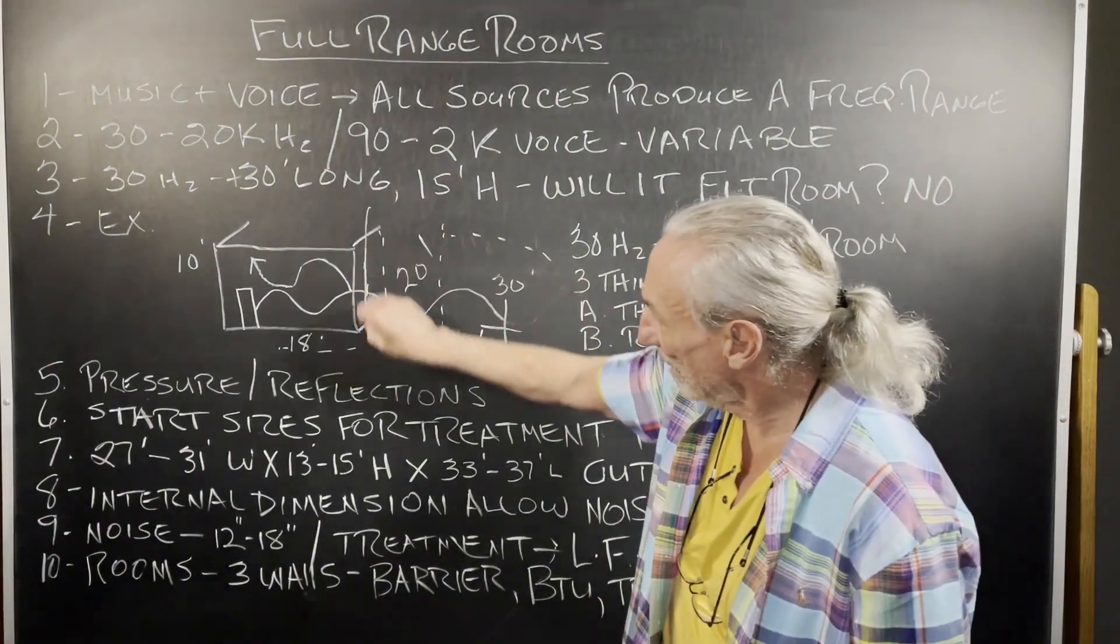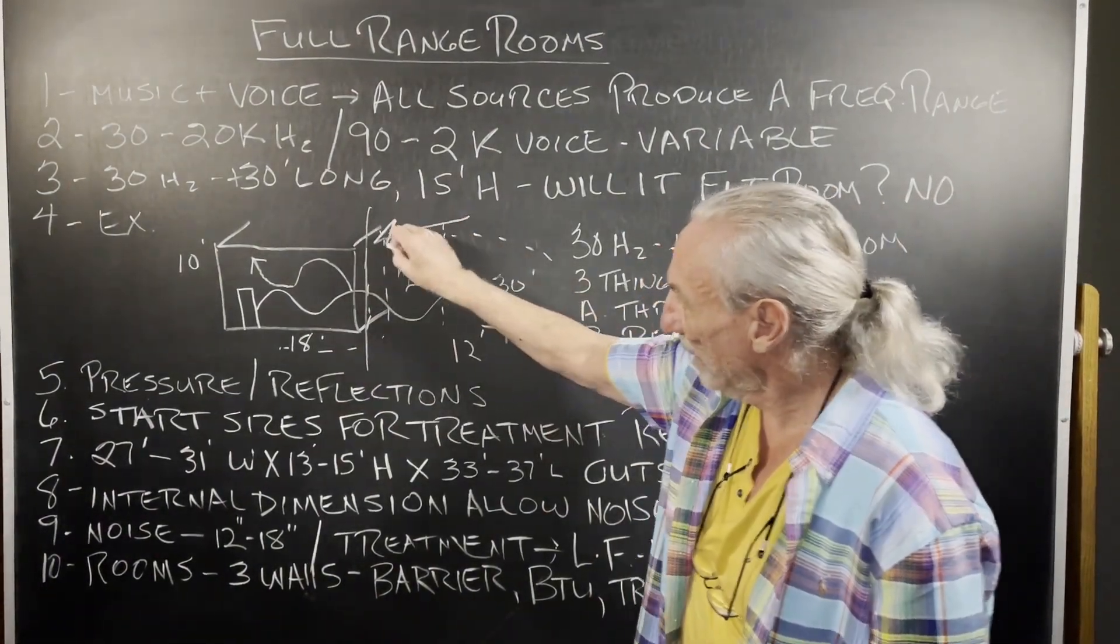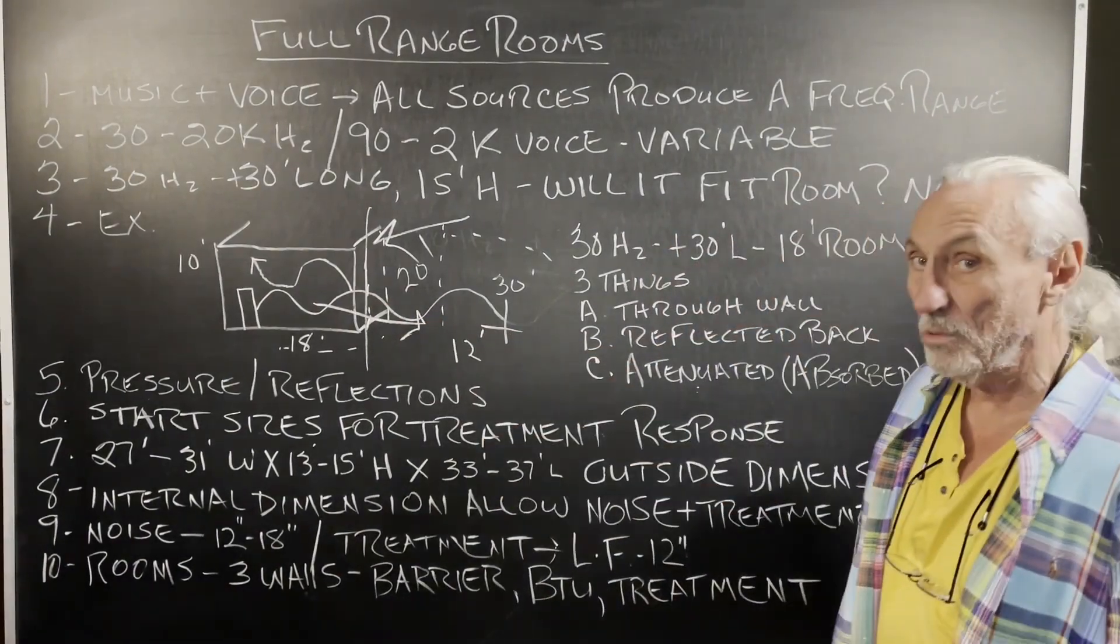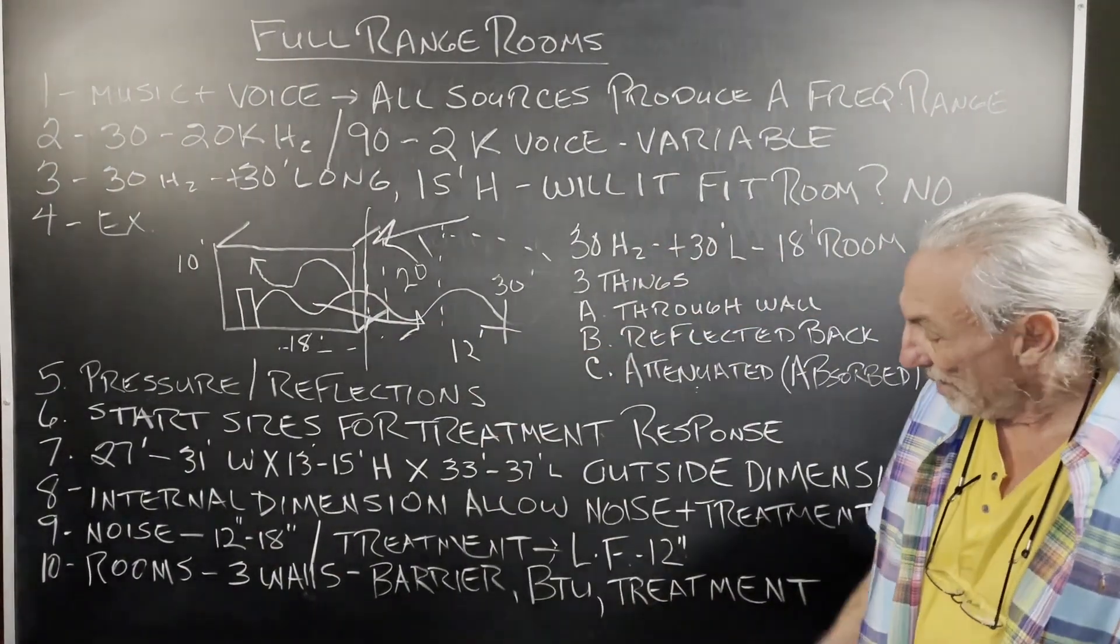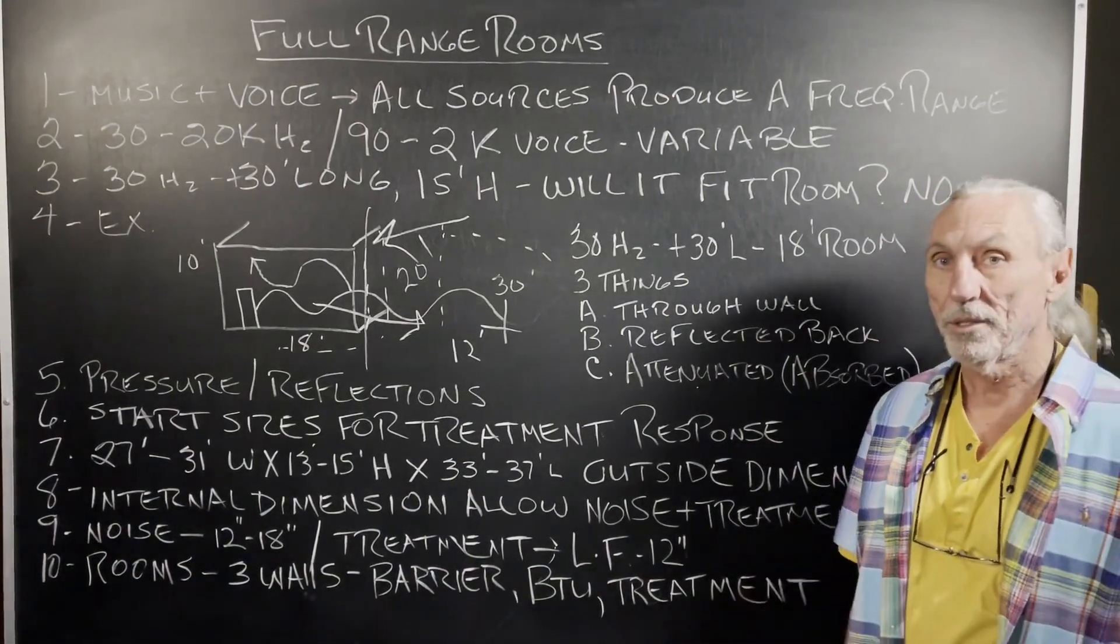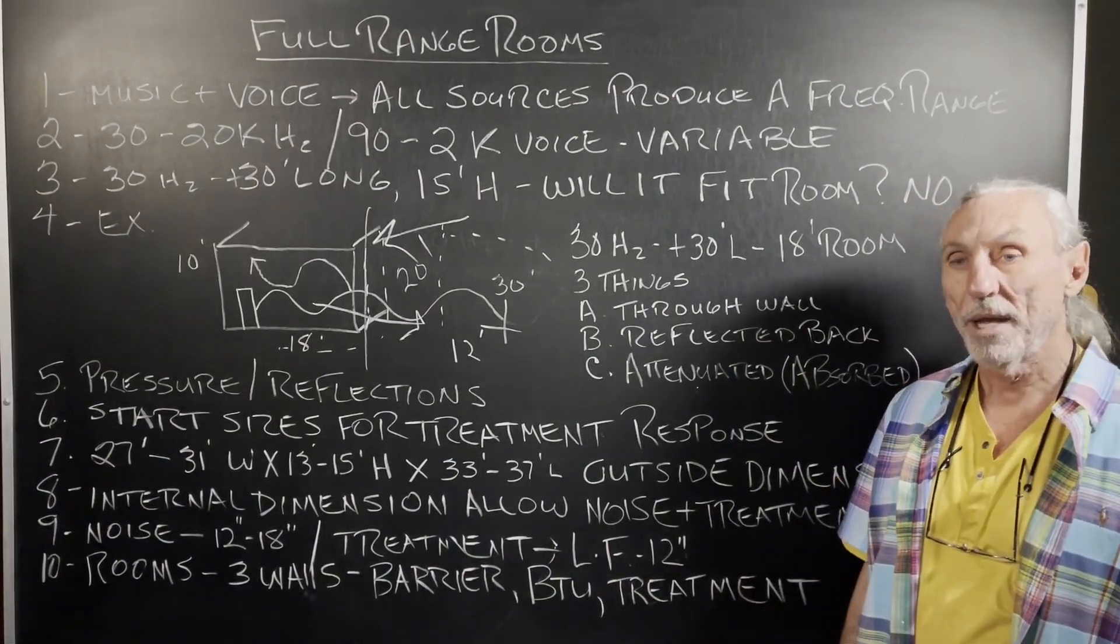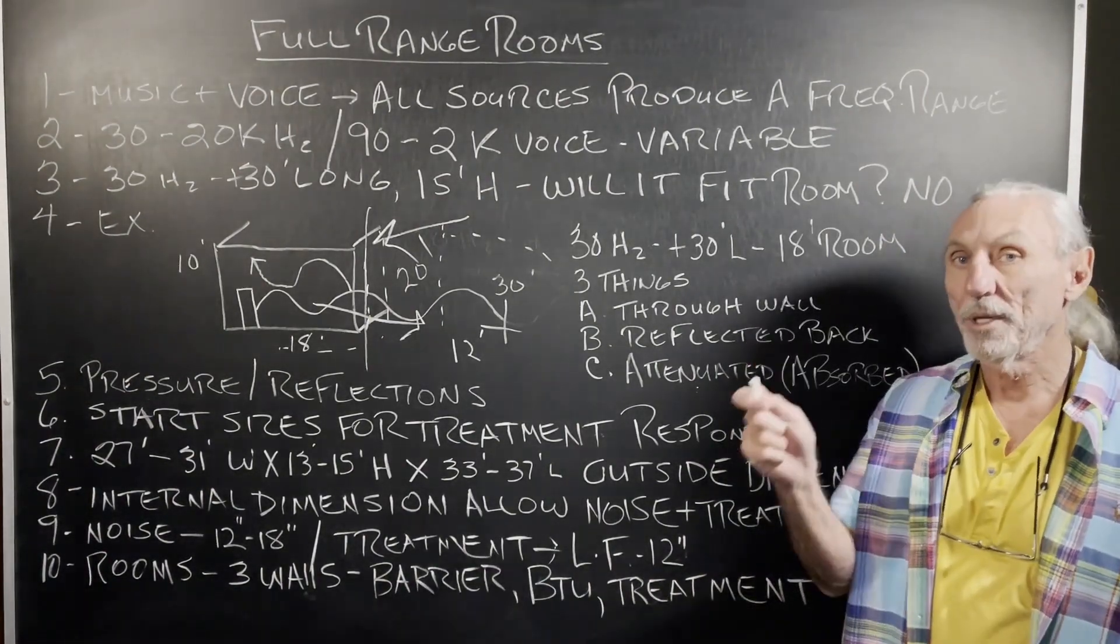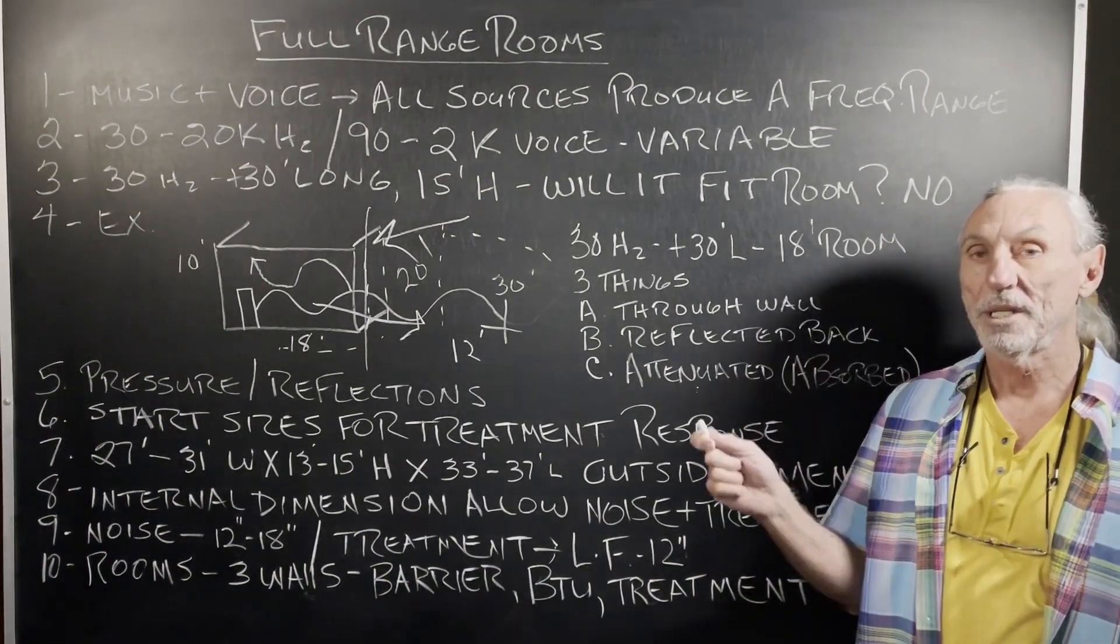Barriers for noise. That's on the outside. Stop the noise from getting in. Stop the noise from leaving. Same two-way valve, right? BTU, keep the room warm or cool. Winter, summer, seasonal temperature management. Treatment, absorption and diffusion. Three separate walls. Three separate functions.